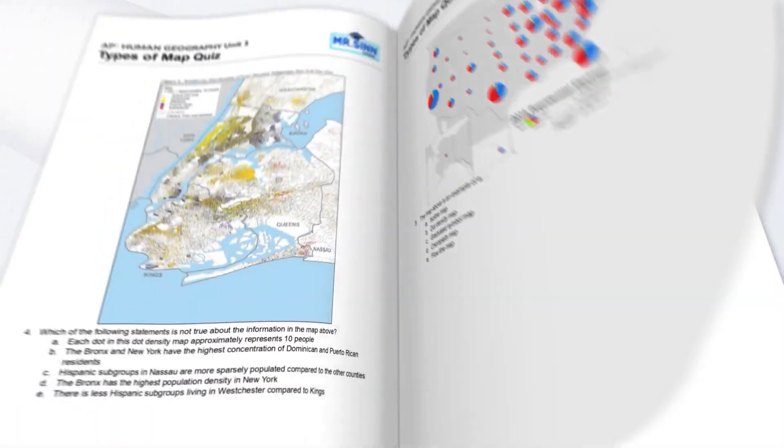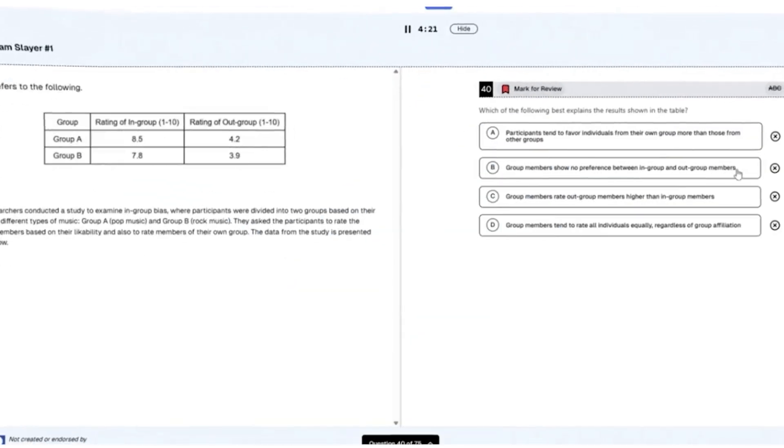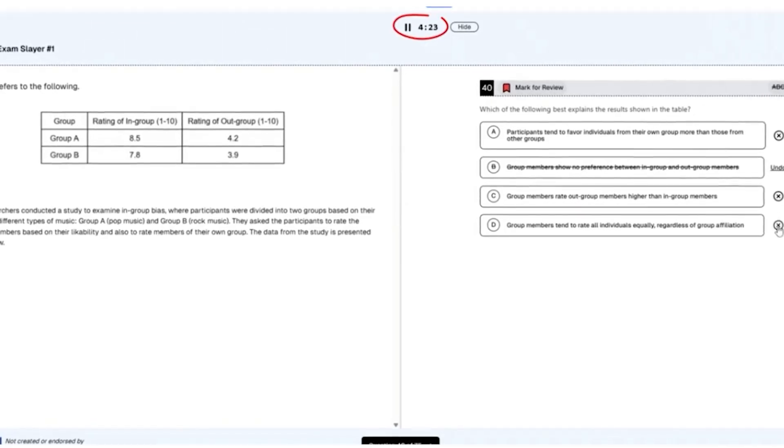These packets were built from the ground up for AP students. As I taught my own students in the classroom, I constantly tweaked and changed the Ultimate Review Packet and Exam Slayer to fit their needs, making sure that the resources in the course are exactly what you need to succeed, not only in your own class, but on the AP exam as well.